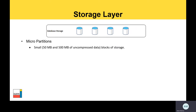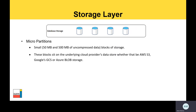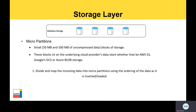Data is stored in micro partitions, which are small blocks of storage ranging between 50 megabytes and 500 megabytes in size. These blocks sit on the underlying cloud provider's data store, whether that be Amazon S3, Google Cloud Storage buckets, or Azure Blob Storage. Essentially, Snowflake treats each micro partition as a unit of DML. As data lands into Snowflake, a few key things happen transparently to the user. The incoming data is divided and mapped into micro partitions using the ordering of the data as it's inserted or loaded. The data is then compressed into Snowflake's native format, and finally metadata is captured and stored for future reference.